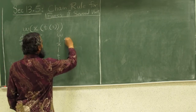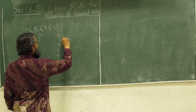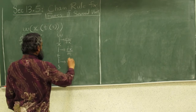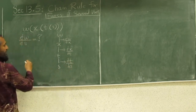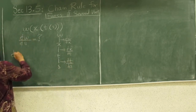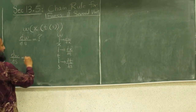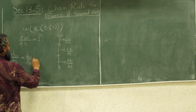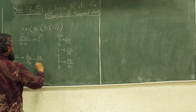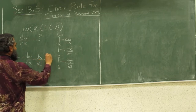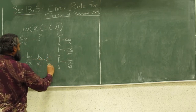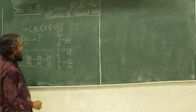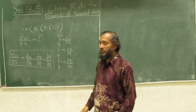You have dw/dx in this relationship, you have dx/dt and you have dt/ds. So you get dw/ds = (dw/dx) × (dx/dt) × (dt/ds). This is what you learned in calculus 1 as the chain rule.